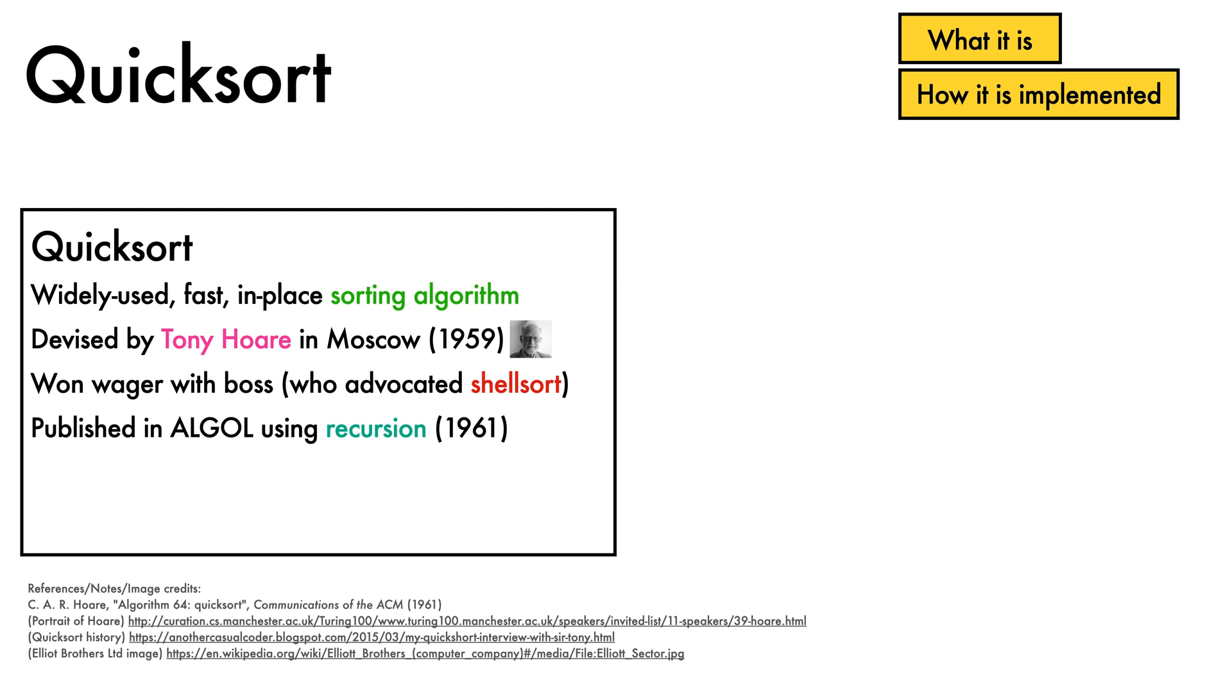After learning about recursion in Algol, Hoare published the Quicksort algorithm in 1961 in the communications of the ACM.